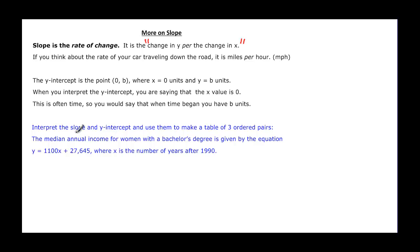So let's look at this problem. Interpret the slope and the y-intercept and use them to make a table of three ordered pairs. The median annual income of women with a bachelor's degree is given by this equation, and then we have the equation, and then it tells us that x is the number of years after 1990. So that's our x. And then if we could just define our y, then it will be interpreting pretty easy. And the y is usually what they talk about the problem being, and so that would be the median annual income. So we'll just call that income.